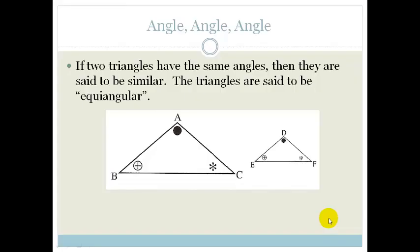If two triangles have the same angles, then they are said to be similar. The triangles are said to be equi-angular. So for example, this one we would say triangle ABC is similar to triangle...